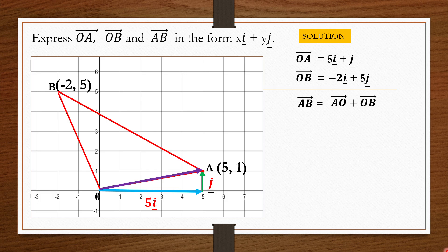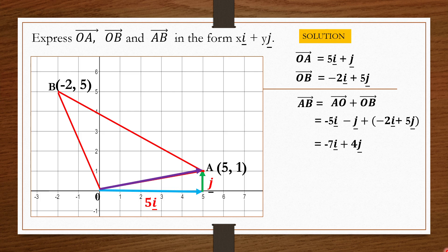We have OA equals 5i plus j. Since AO equals negative OA, AO equals negative 5i minus j. Adding OB which is negative 2i plus 5j gives AB equals negative 7i plus 4j. The answer is expressed in the form xi plus yj as required.